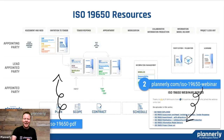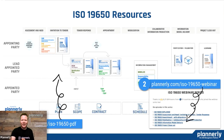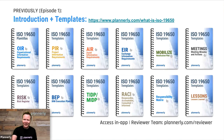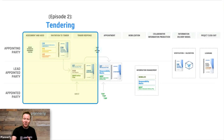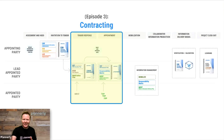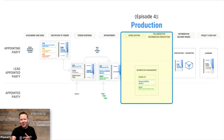We've got a few resources to share with you. The first is access to the diagrams we've been using throughout the webinars — you can find them on the link provided. All webinars in this series are recorded and available on the webinar page. The previous episodes covered: templates to kickstart the process; tendering and creating exchange information requirements; contracting and appointment documentation; production, deliverables, QA and delivery of the right information; and today, episode six, closing out the project.